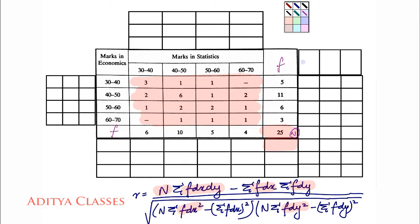Next we need Σf·dx·dy, so we will designate that cell accordingly. These two rows and columns are fixed for f·dx·dy. The remaining cells are for f·dx and f·dy. We will use x for economics marks and y for statistics marks. So those columns become f·dx and f·dx², while those rows become f·dy and f·dy².